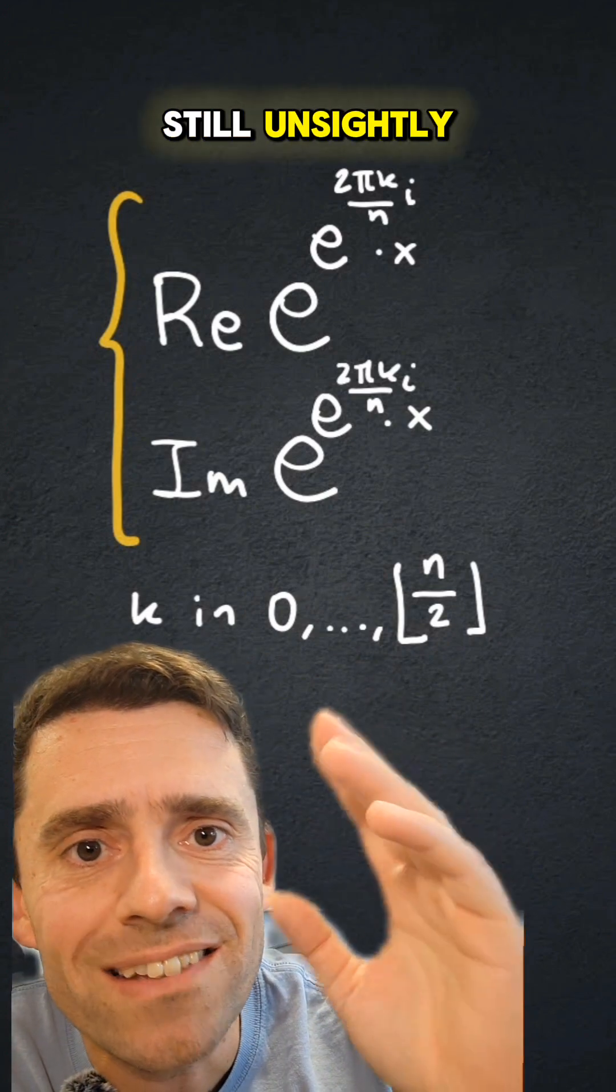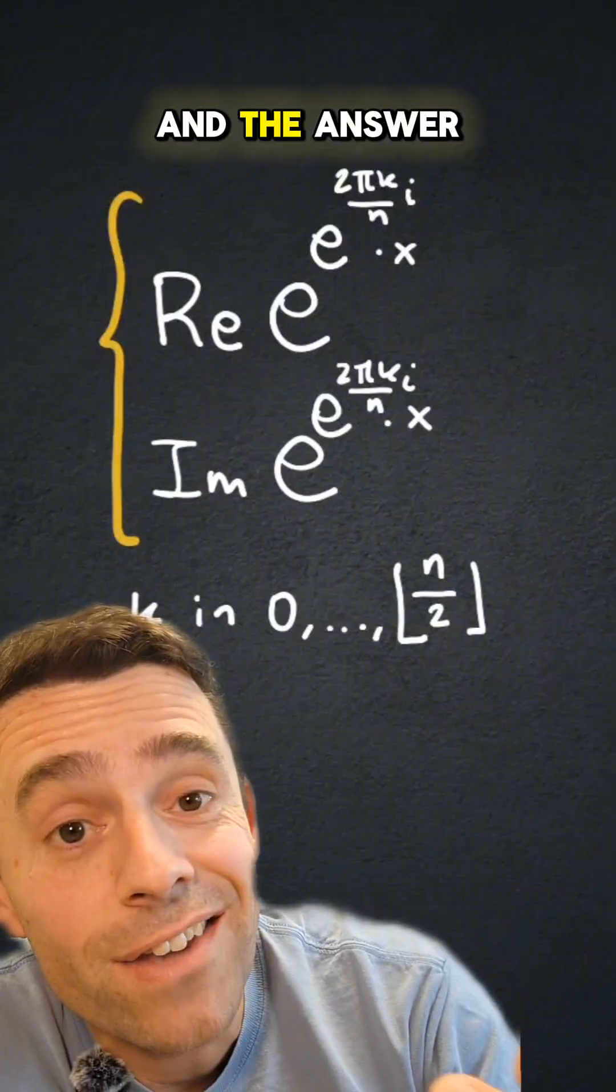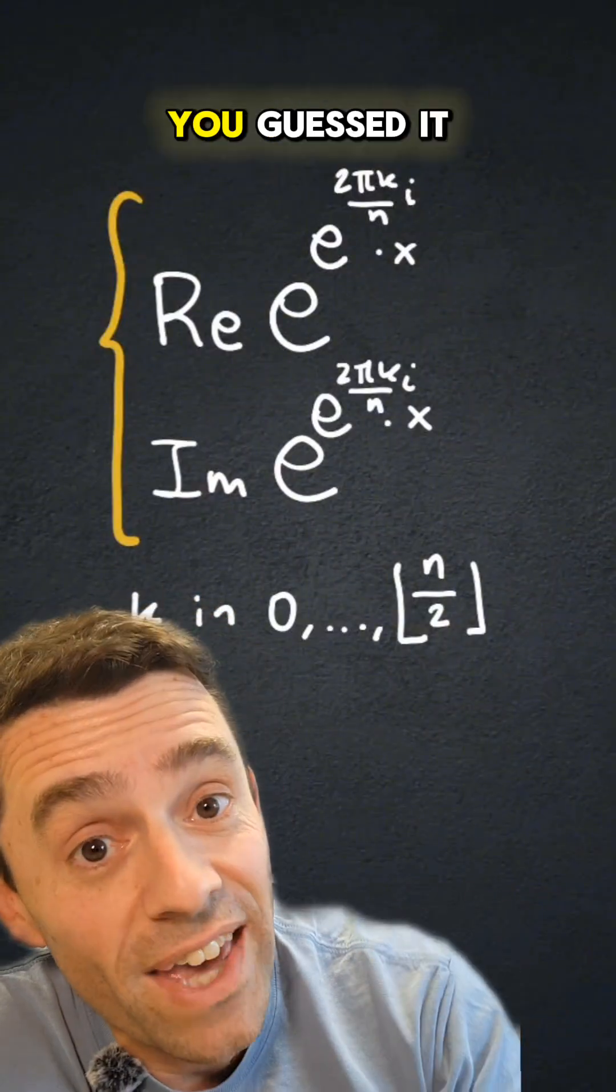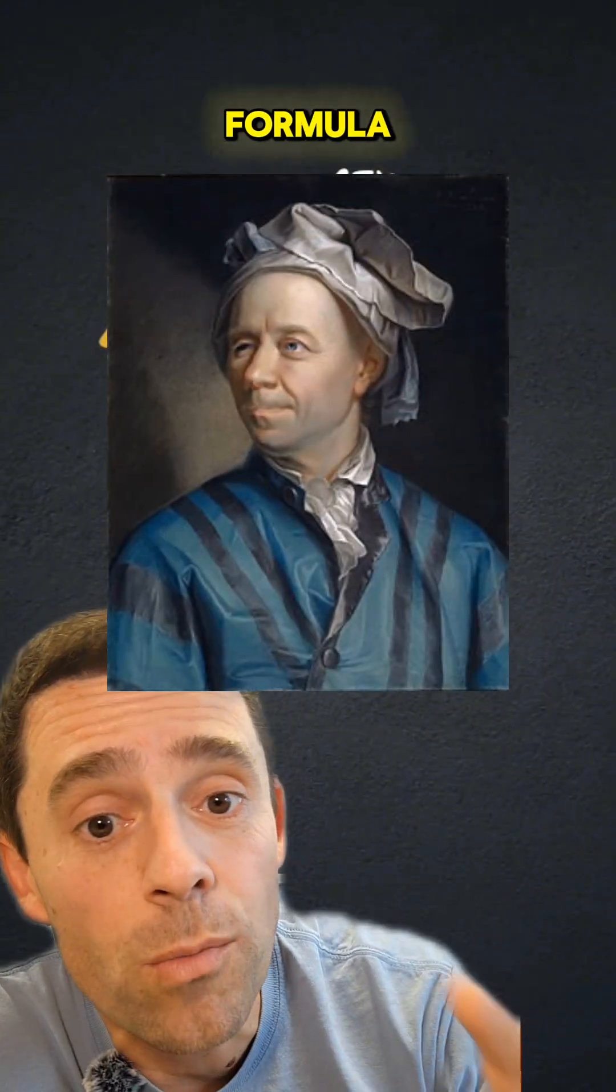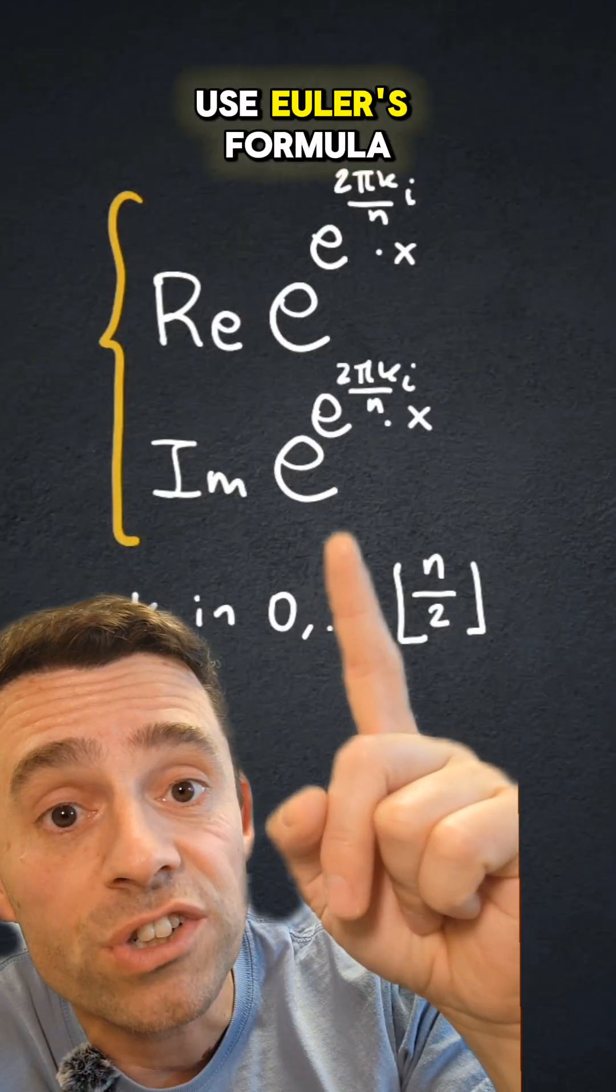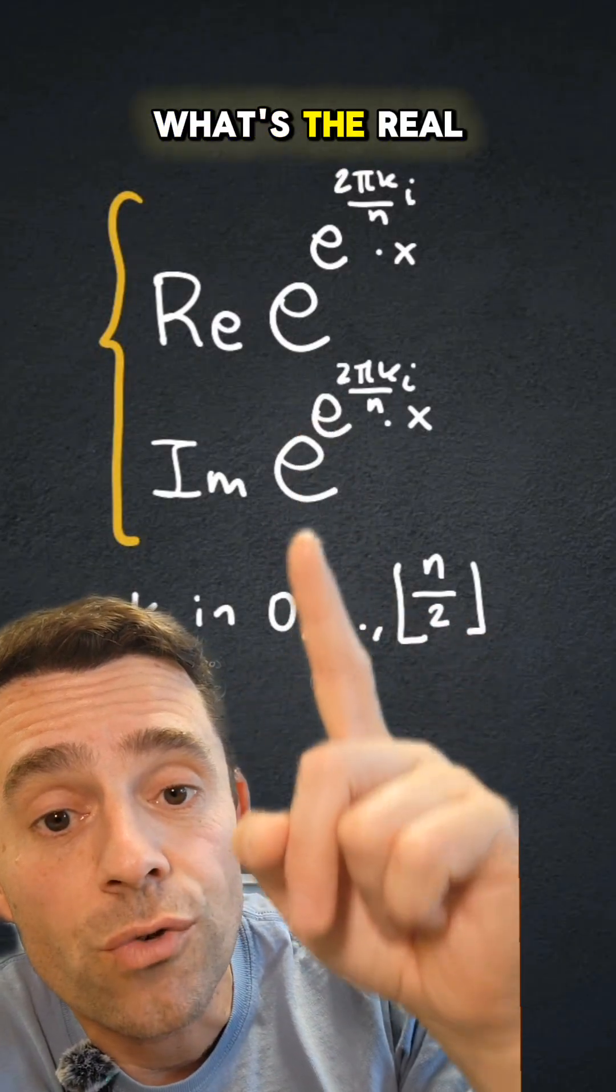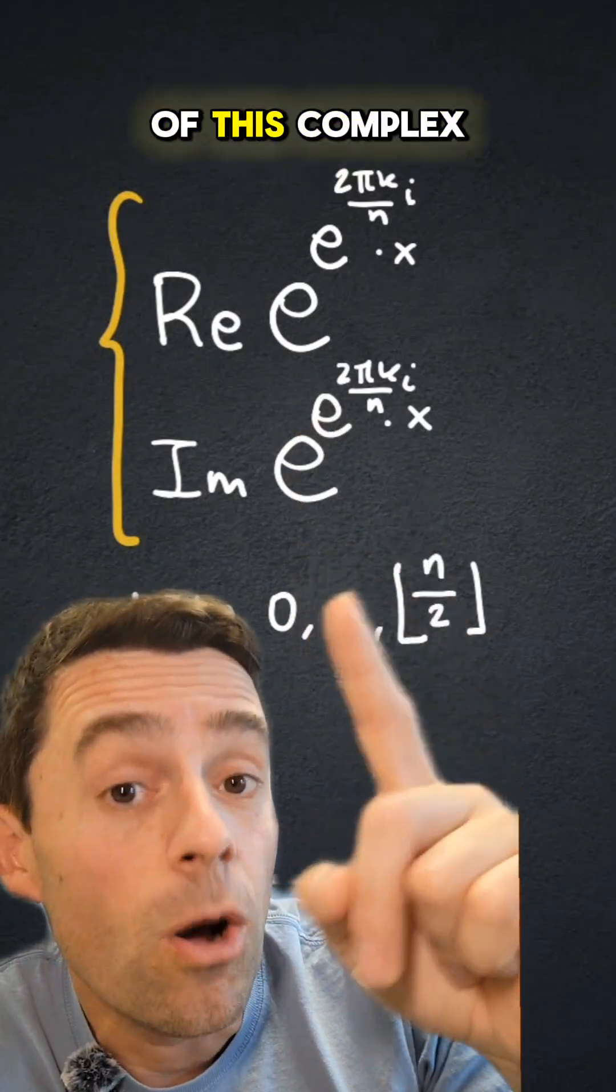But those are still unsightly. Can I simplify? And the answer is yes, of course we can simplify, thanks to you guessed it, Euler. Thanks to Euler's formula, I'm going to be able to use Euler's formula to simplify what's the real and imaginary part of this complex exponential.